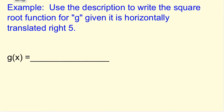Here's an example. Use the description to write the square root function for g, given that it has a transformation of a horizontal translation right 5.